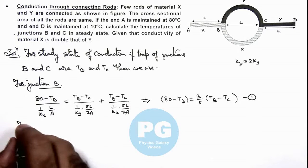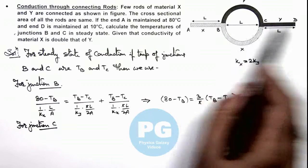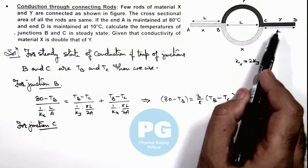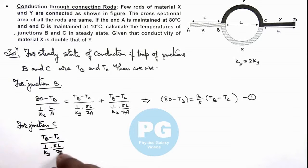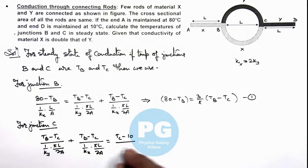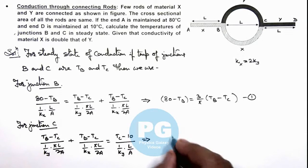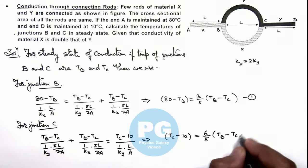Similarly we can write the equation for junction C, where the amount of heat coming from these two circular rods will be equal to the heat which is conducted from C to D. So here we can write in this situation TB minus TC divided by 1 upon ky multiplied by πL by 2A, plus TB minus TC divided by 1 upon kx multiplied by πL by 2A, is equal to TC minus 10. If you simplify this relation it gives TC minus 10 is equal to 6 upon π times TB minus TC. This is the second equation.